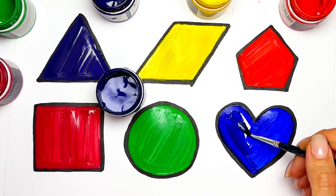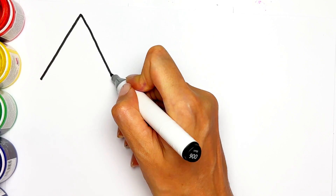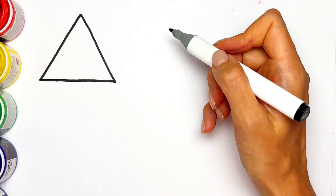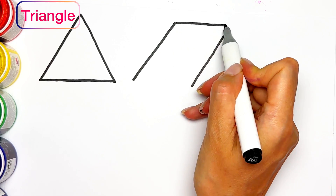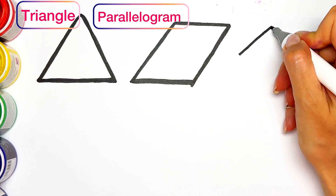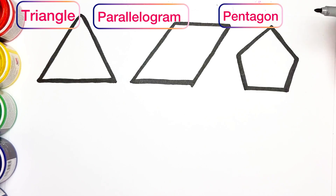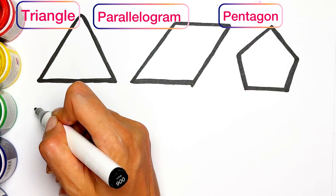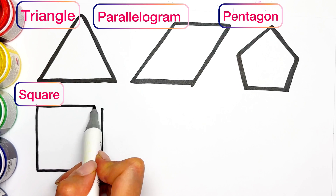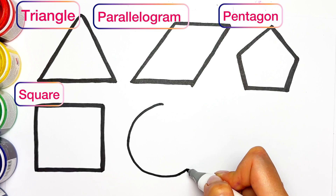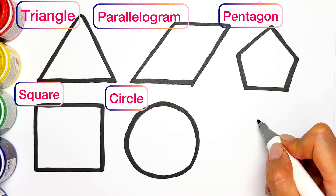Hi, hello! The first shape is triangle, then parallelogram, then pentagon. Next one is square — square has four same-size, same-length sides. Circle and heart.